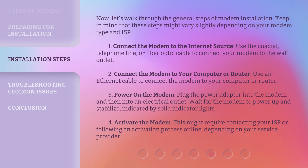Now, let's walk through the general steps of modem installation. Keep in mind that these steps might vary slightly depending on your modem type and ISP. 1. Connect the modem to the internet source — use the coaxial, telephone line, or fiber optic cable to connect your modem to the wall outlet. 2. Connect the modem to your computer or router using an Ethernet cable. 3. Power on the modem — plug the power adapter into the modem and then into an electrical outlet, and wait for the modem to power up and stabilize, indicated by solid indicator lights. 4. Activate the modem — this might require contacting your ISP or following an activation process online, depending on your service provider.